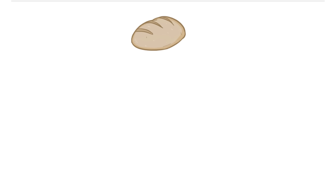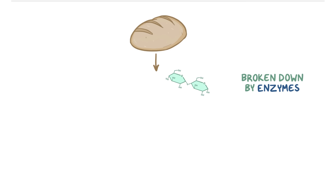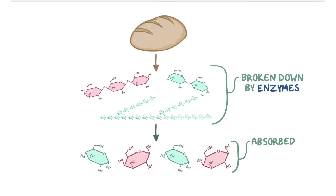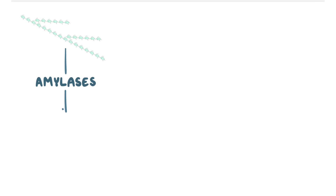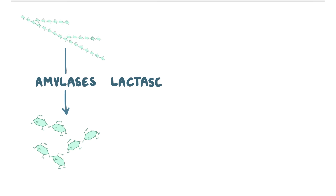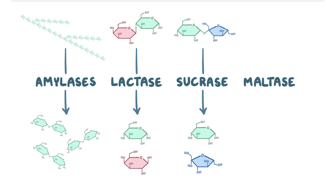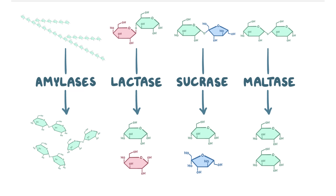When you eat something like a piece of onion bread, enzymes start breaking down the disaccharides, oligosaccharides, and polysaccharides into monosaccharides so they can be absorbed. Different enzymes help to break down different linkages. For example, amylases break down large polysaccharides like starch into smaller units, whereas lactase, sucrase, and maltase break down lactose, sucrose, and maltose into their monosaccharides.